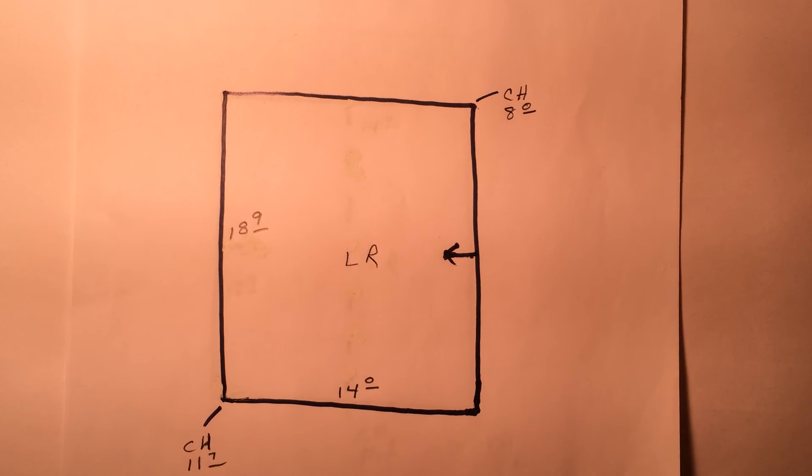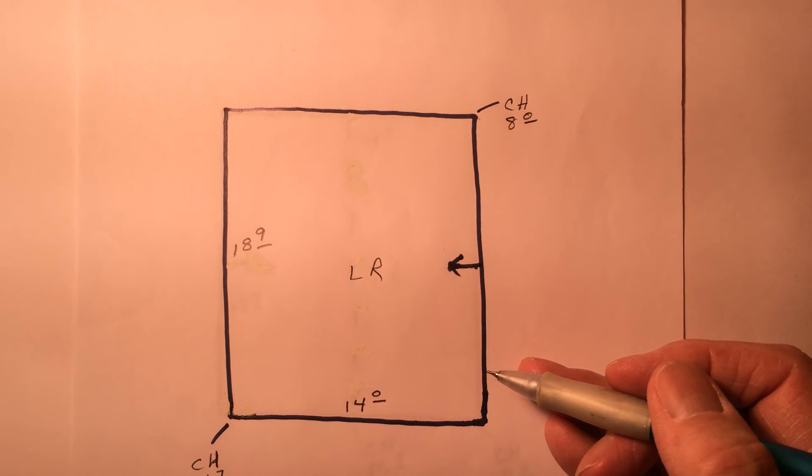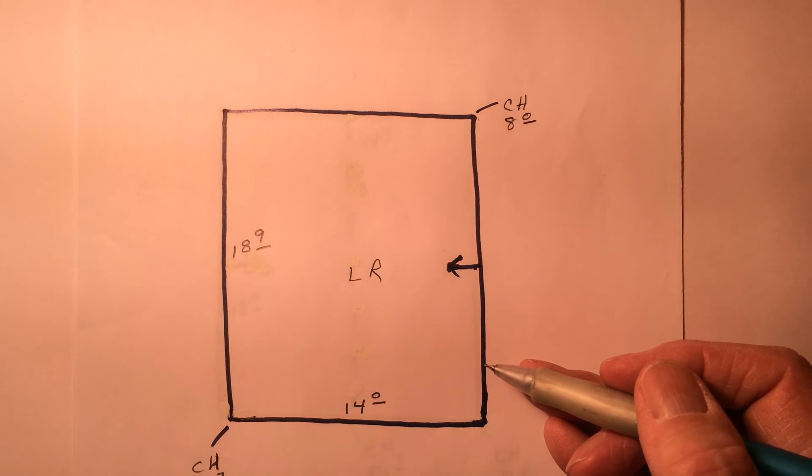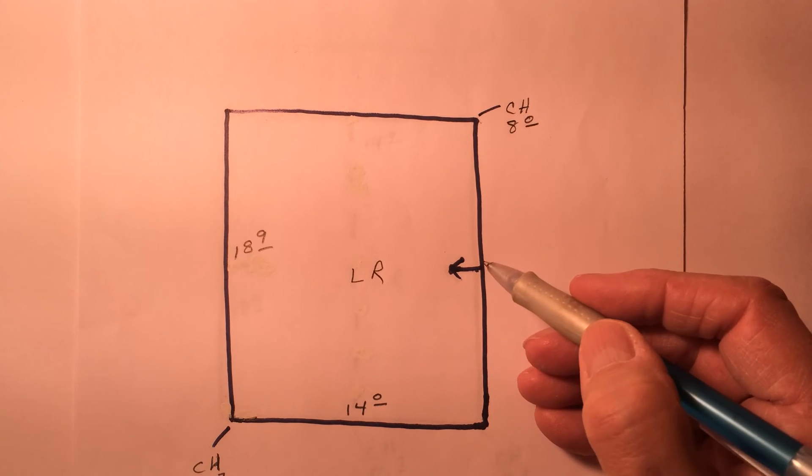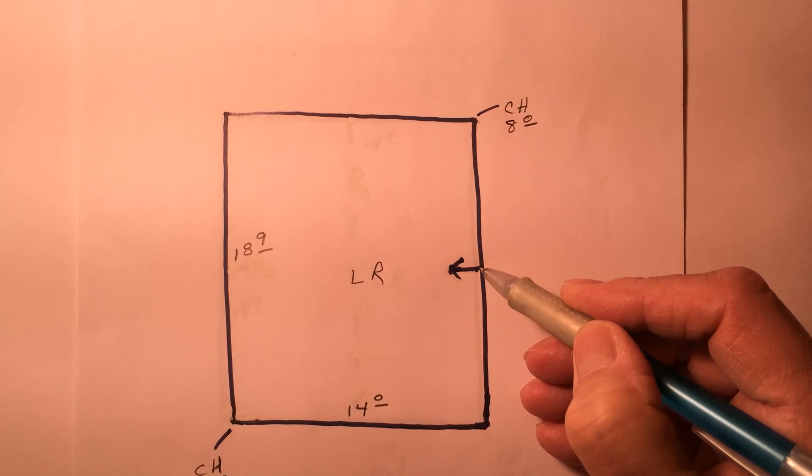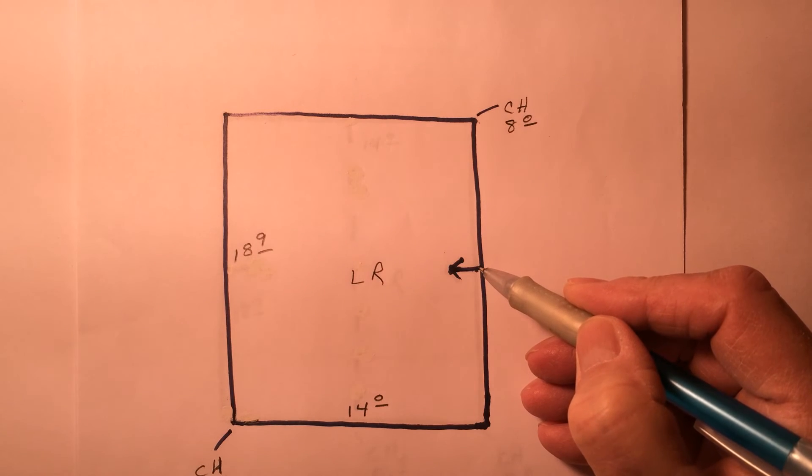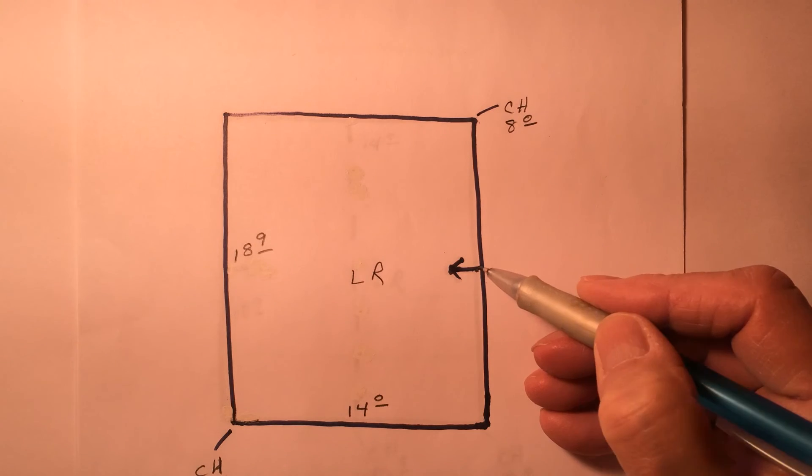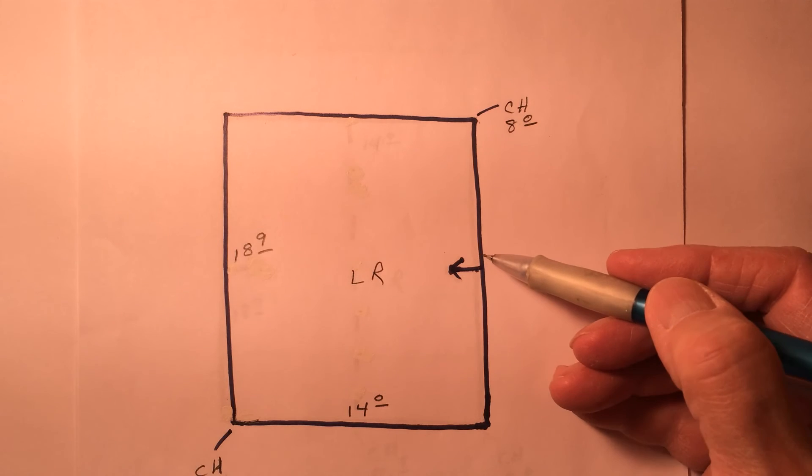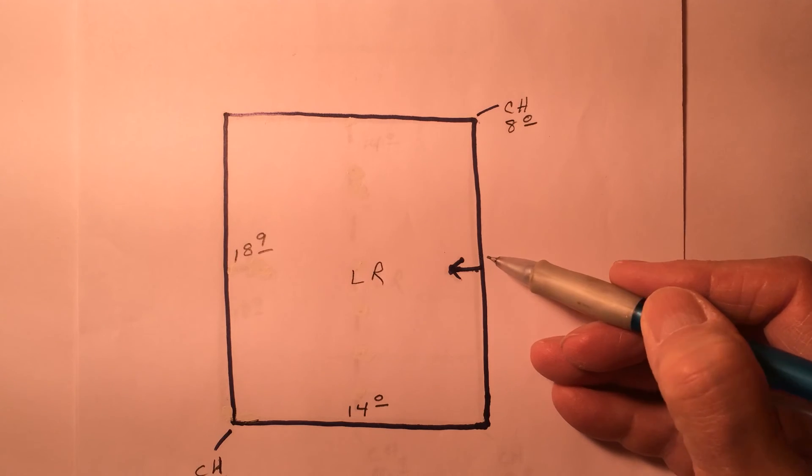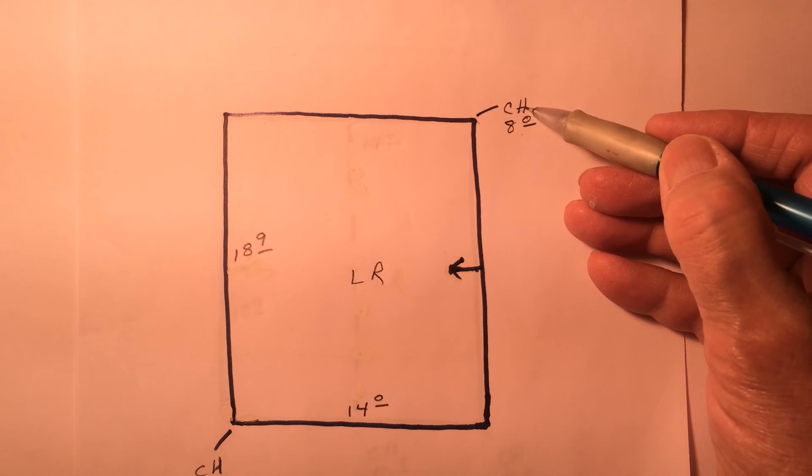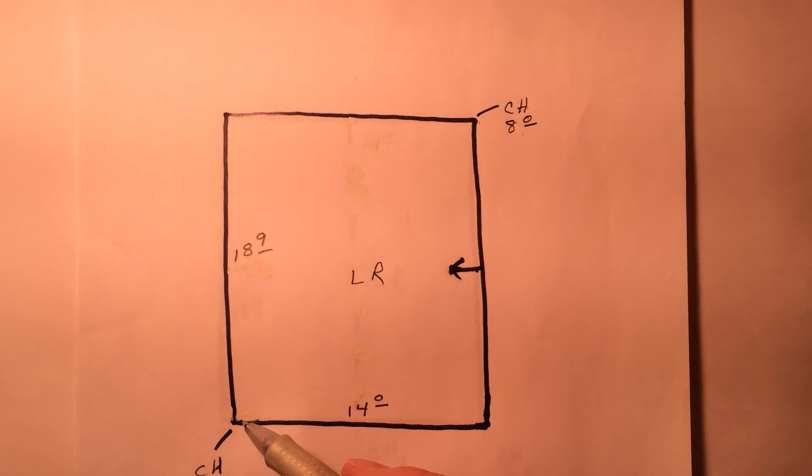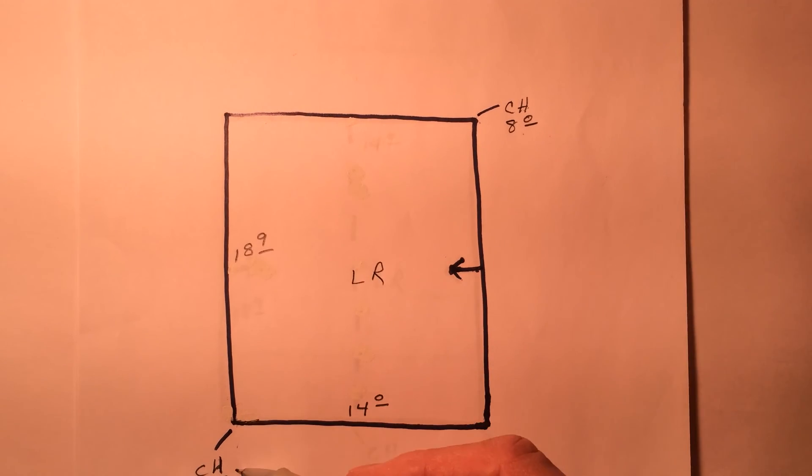We've assumed in these other drawings that the ceilings were flat and eight feet. Ceiling heights can be anything. In this particular room we're showing that this ceiling is sloped. We put an arrow like so to indicate that this ceiling slopes up from this point. The low wall is eight feet. CH stands for ceiling height. The high wall, which is all of this, is 11.7 feet.